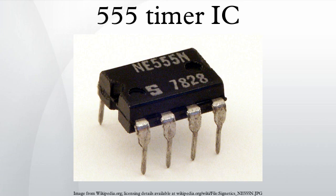In bistable mode, the 555 timer acts as a basic flip-flop. The trigger and reset inputs are held high via pull-up resistors while the threshold input is simply floating. Pulling the trigger momentarily to ground acts as a set and transitions the output pin to VCC. Pulling the reset input to ground acts as a reset and transitions the output pin to ground. No timing capacitors are required in a bistable configuration. Pin 5 is connected to ground via a small-value capacitor, and pin 7 is left floating.